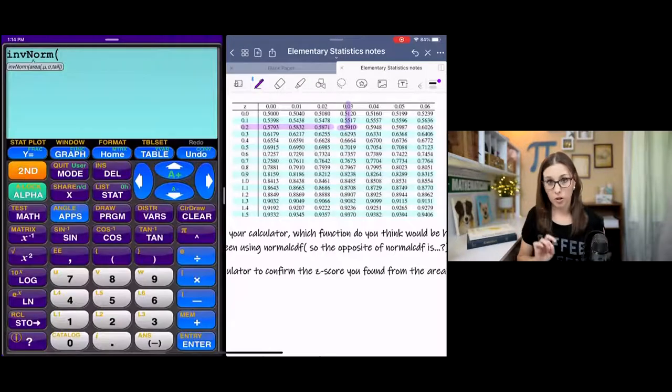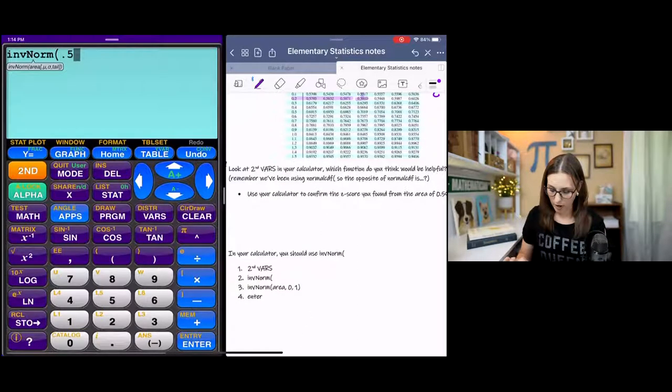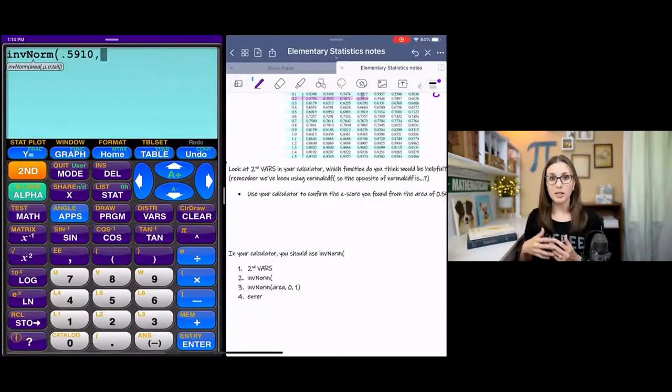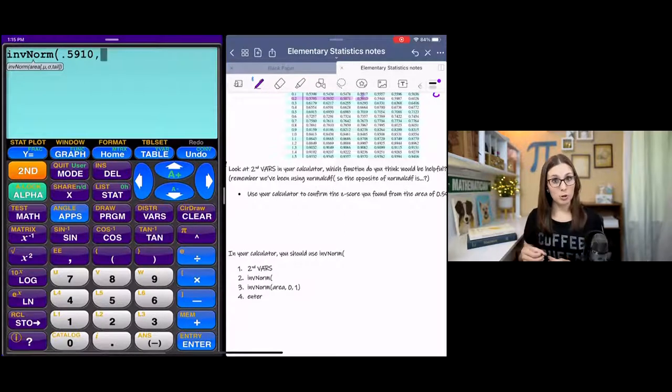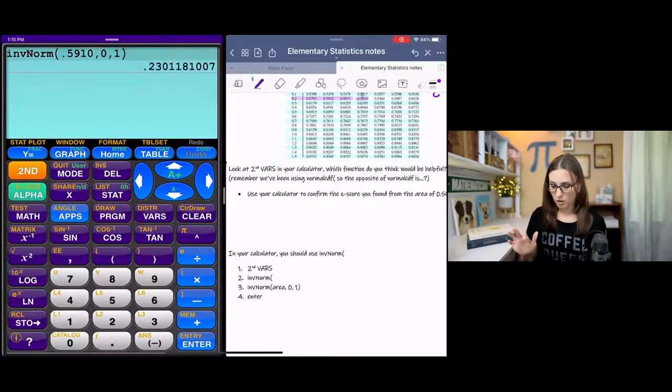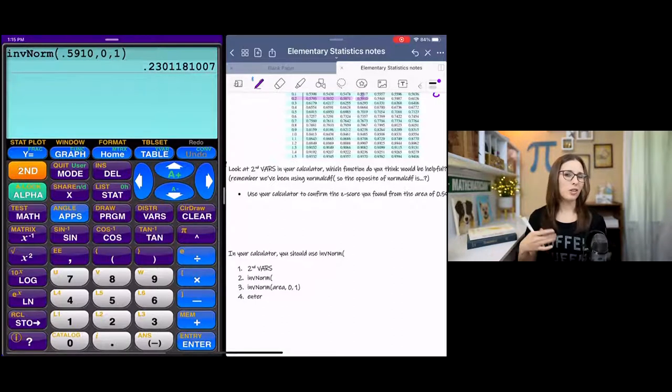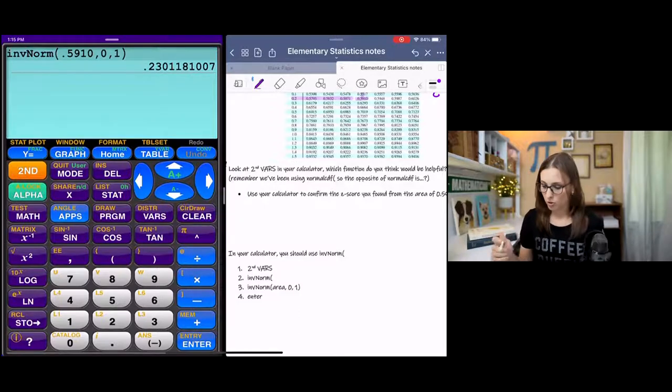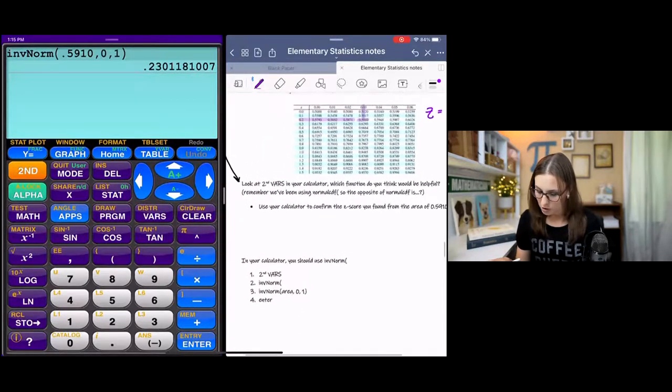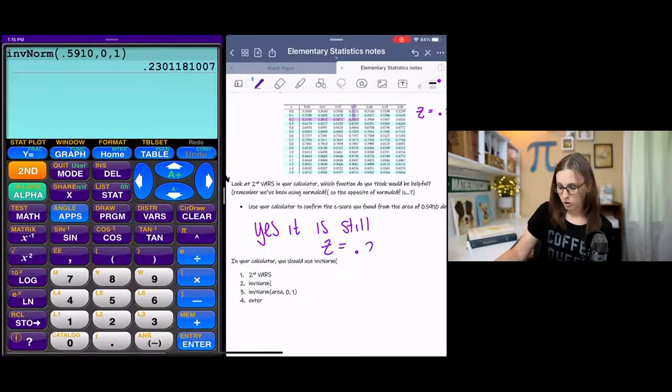Under inverse norm, it's got some hints here on my calculator. You're supposed to do inverse norm, and then you type in the area and then the mean and the standard deviation. Inverse norm, because we're talking about a normal curve with an area of 0.5910. And then this is standardized because it is a z-score. A z-score means that it's standardized. And a standardized variable has a mean of 0 and a standard deviation of 1. Close it, enter, and looky there, we get that same 0.23 that we got from the table.